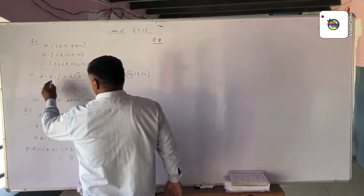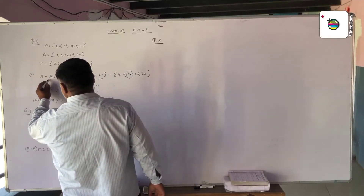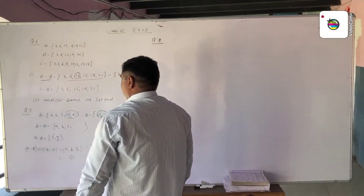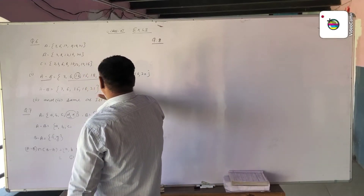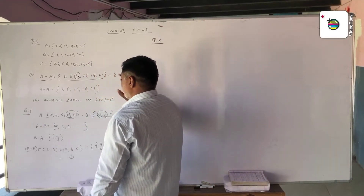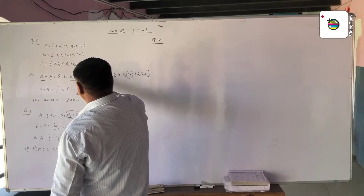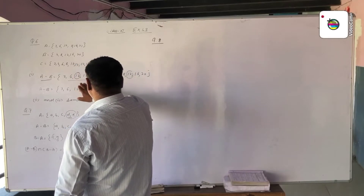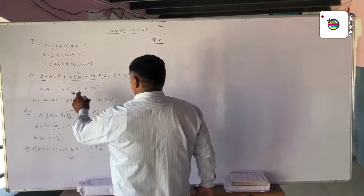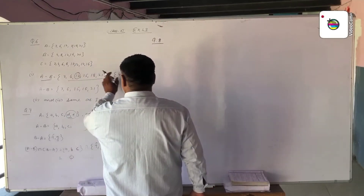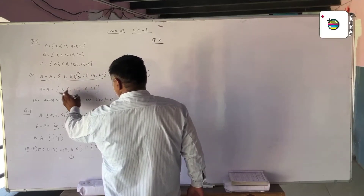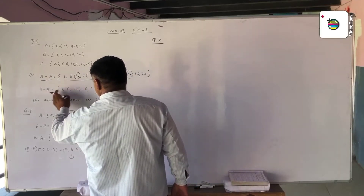Now we have to find A difference B. A difference B is the set of elements of A minus elements of B. We take those elements which are in A and not in B. The common element is 12, so 12 is not taken in A difference B.